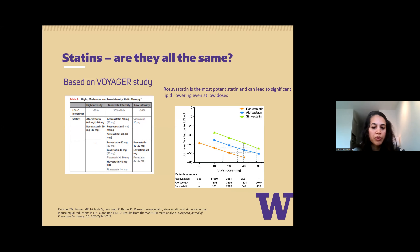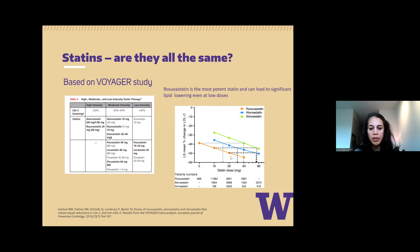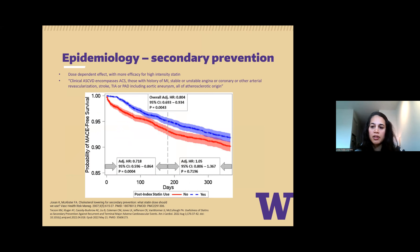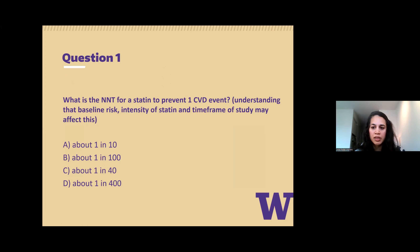The meat of this talk is statins and primary prevention because that's where the most nuance and controversy lies. I think we all know about the different statin intensities, but I'd point out that even between rosuvastatin and atorvastatin there are significant differences in potency. For example, a 20 mg dose of rosuvastatin is about equivalent in potency to an 80 mg dose of atorvastatin, so you can get a little more by switching to rosuvastatin 40.